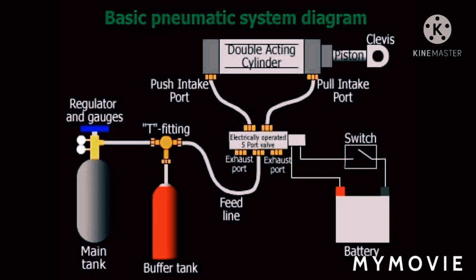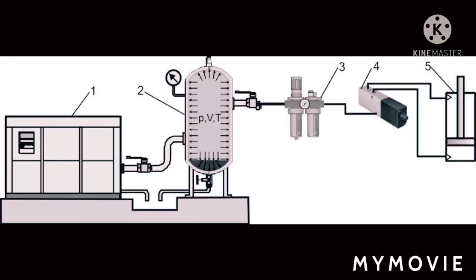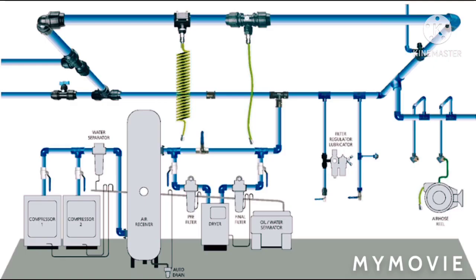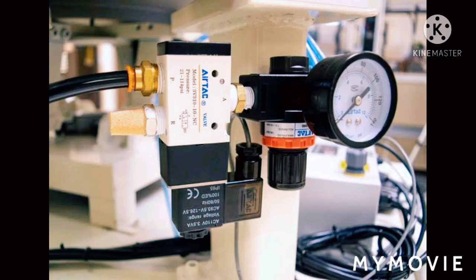Most pneumatic systems rely on a constant supply of compressed air to make them work. This is provided by an air compressor. The compressor sucks in air from the atmosphere and stores it in a high-pressure tank called a receiver.